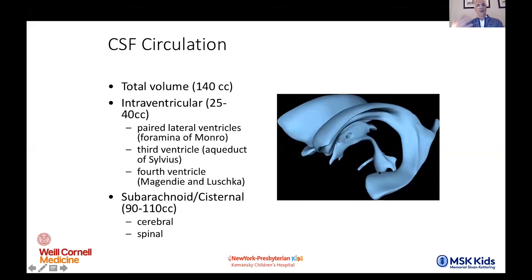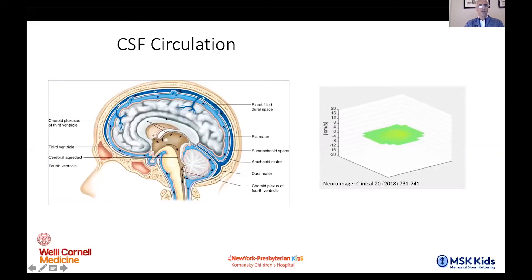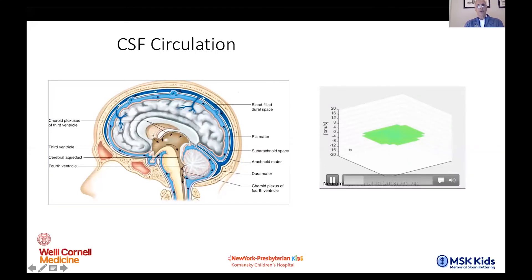From the aqueduct of Sylvius into the fourth ventricle, and then out of the fourth ventricle through three outlet foramina — the midline aperture and the paired lateral apertures of Luschka — then into the spinal and brain subarachnoid space. In this illustration you can see CSF production within the ventricular compartment, flowing through the lateral ventricle into the third, through the aqueduct and fourth ventricle, then into the subarachnoid space.